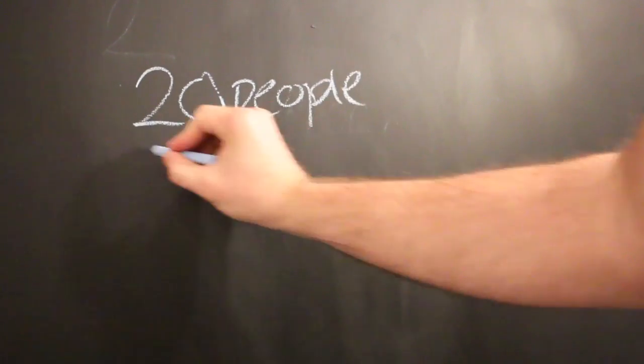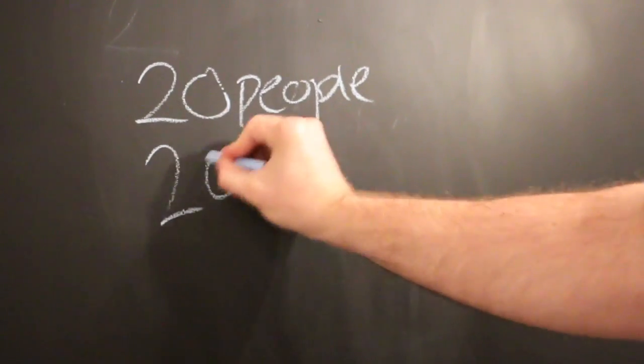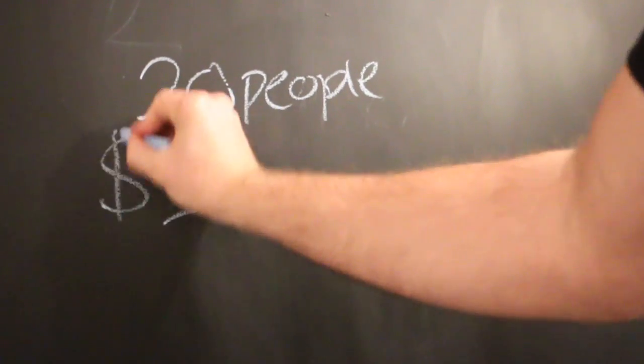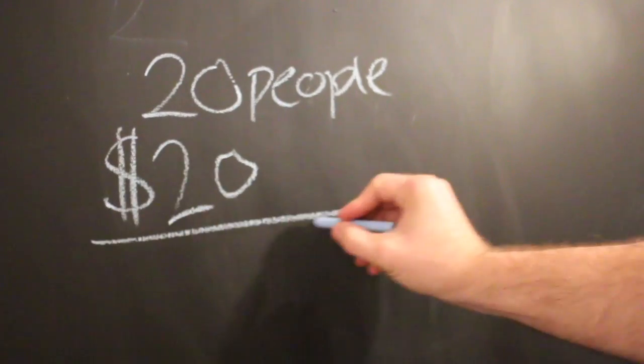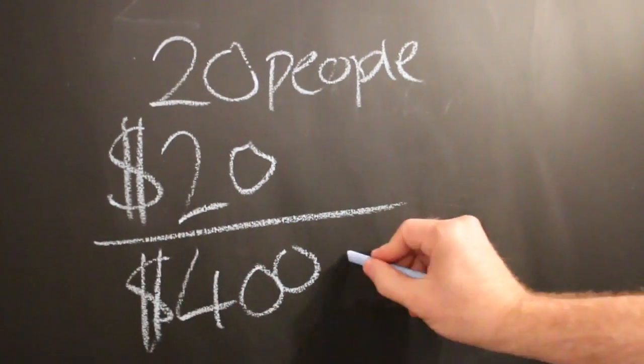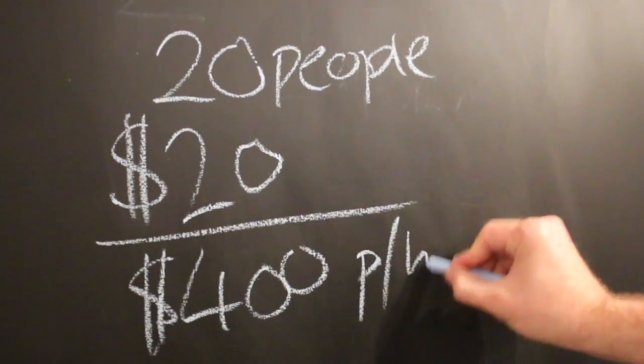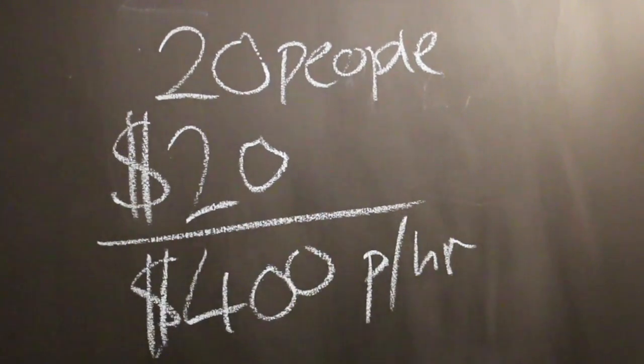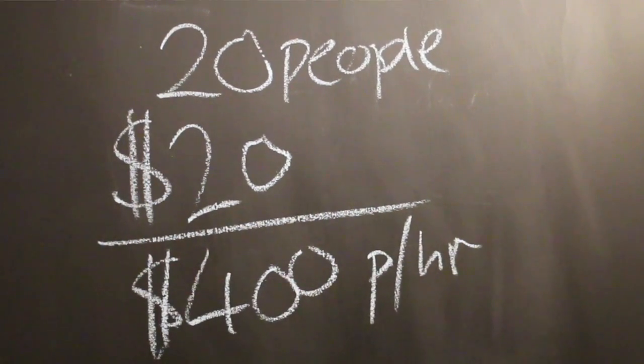If there are 20 people in your audience and the average hourly salary of each of them is twenty dollars, you could be throwing away four hundred dollars an hour if people don't engage, don't feel motivated, and remember nothing by the end of the presentation.